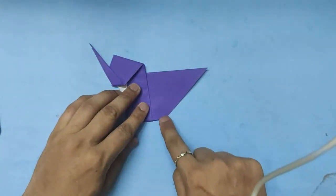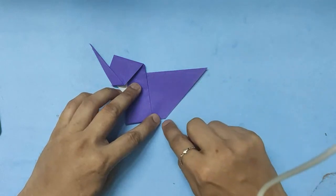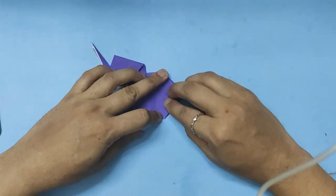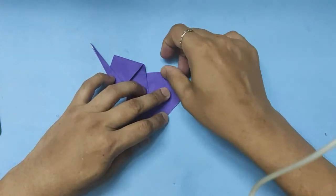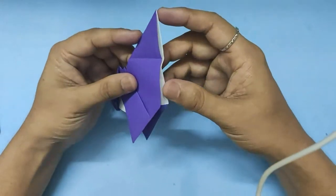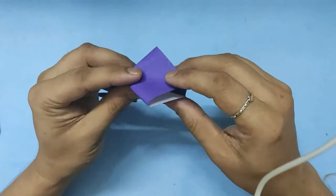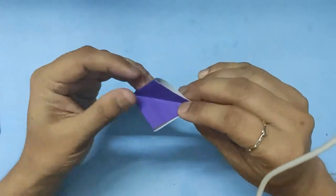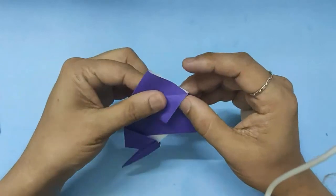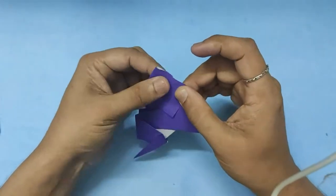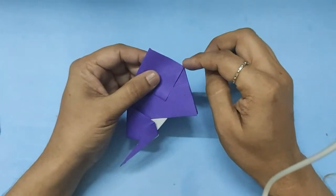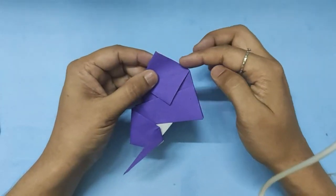Now we will form the back. So bring the tail to that corner and press it. Give it a fold out there. Now we will open it and squash fold it, forming into a square. We will make an A fold from that line.